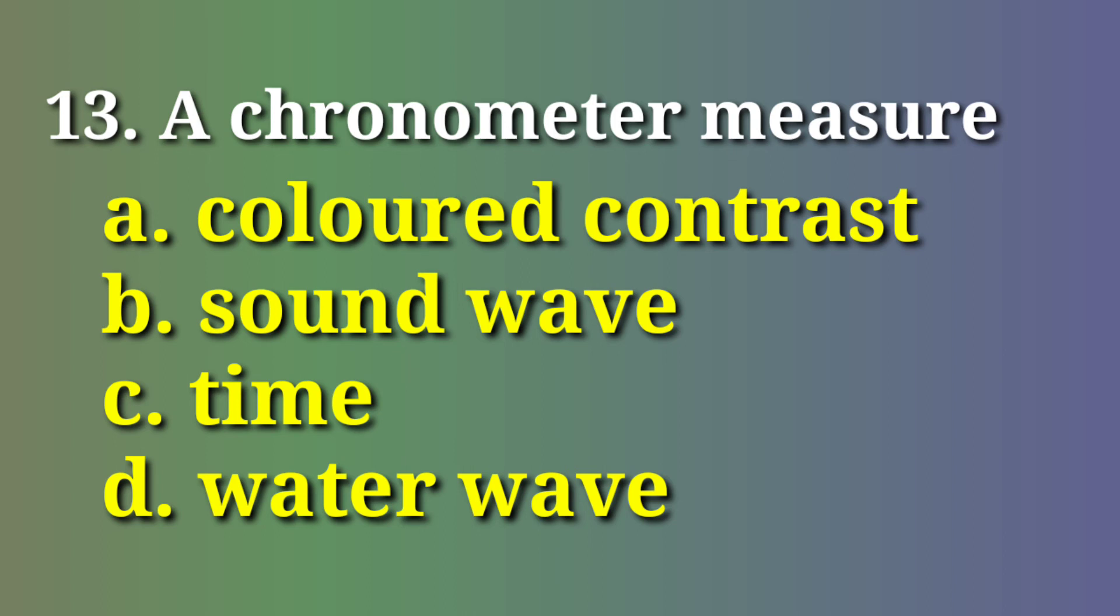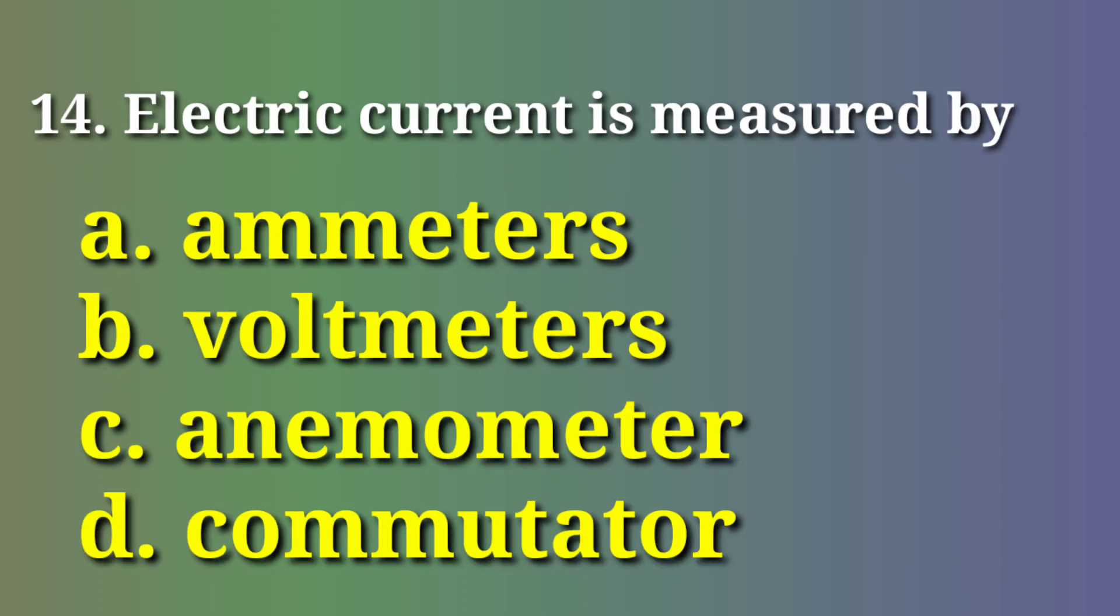A chronometer measures time. Electric current is measured by an ammeter.